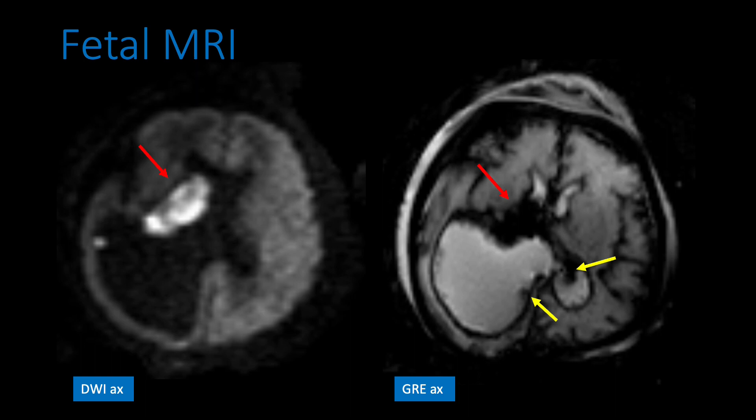Additional fetal MRI axial images demonstrate hyper-intense signal on DWI and blooming on GRE within the medial right thalamus, consistent with intraparenchymal hemorrhage. Layering blood products are also noted within the posterior horns of both the right and left lateral ventricles. ADC images not shown confirmed no presence of acute infarct.